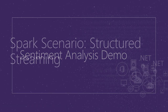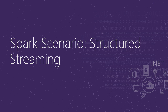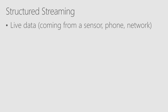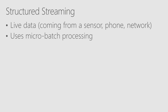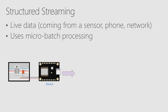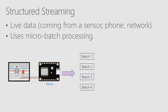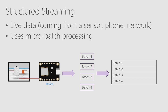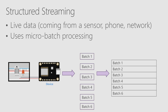Now we have one final scenario: structured streaming or real-time data analysis. In structured streaming, we're working with live data — data coming in from a sensor like an IoT factory sensor, a phone, or a network. Structured streaming uses the principle of micro batch processing — it takes our continuous stream of data and divides it into smaller chunks. Maybe every five seconds represents a new batch, then it performs functionality on each smaller batch and appends the result to a table. Then another five seconds pass, we process another batch and append it — and so on as our stream continues.